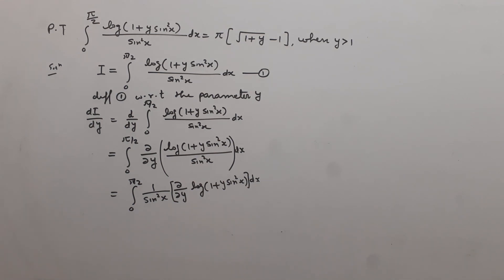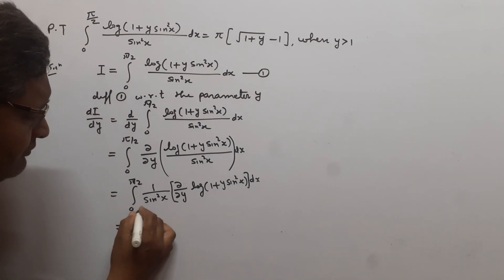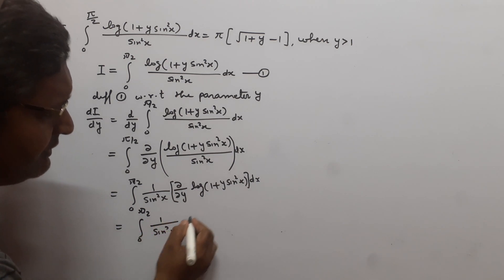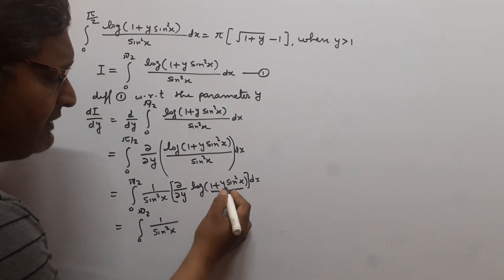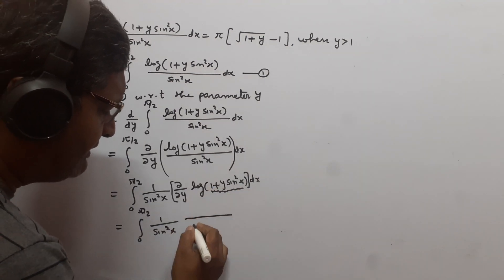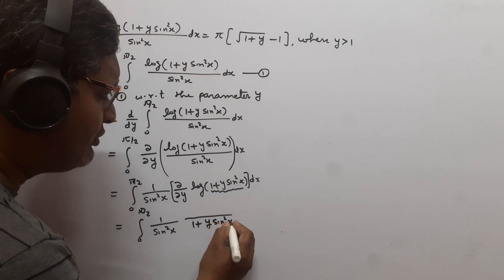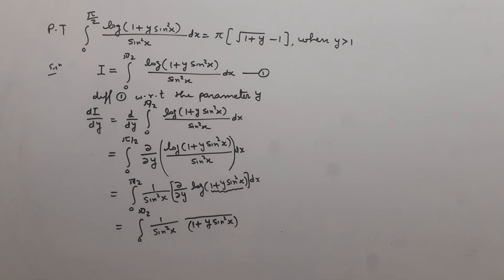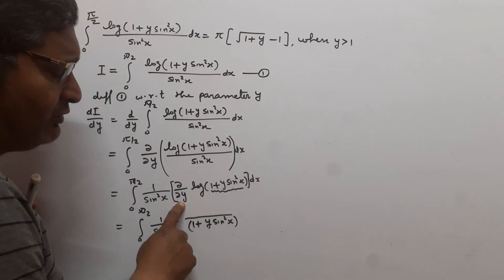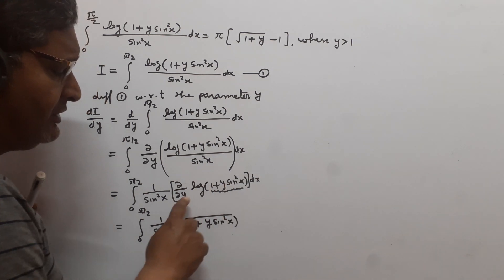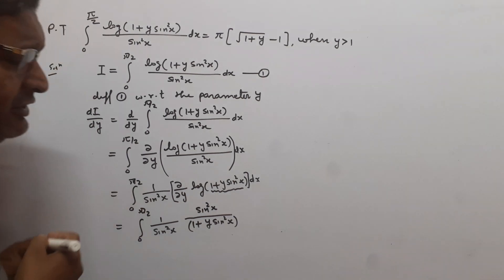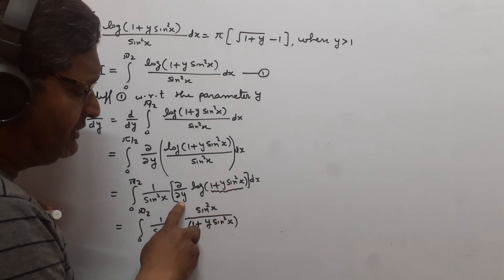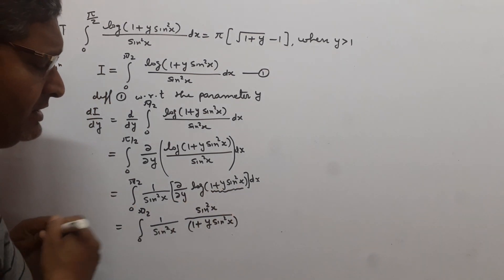Now we differentiate log(1 + y·sin²x) partially with respect to y. We know that differentiation of log(u) with respect to u is 1/u. So differentiation here gives 1/(1 + y·sin²x). Then differentiating (1 + y·sin²x) with respect to y: the 1 is constant giving 0, and y·sin²x gives sin²x, since sin²x is constant with respect to y.